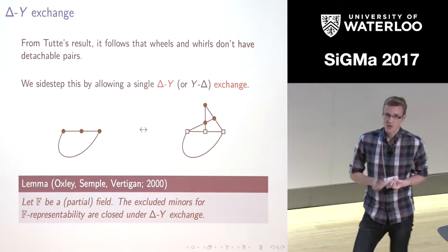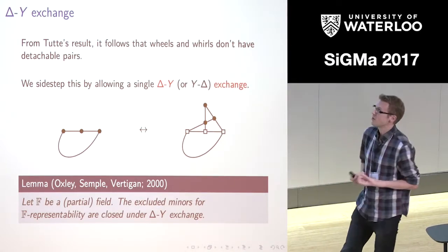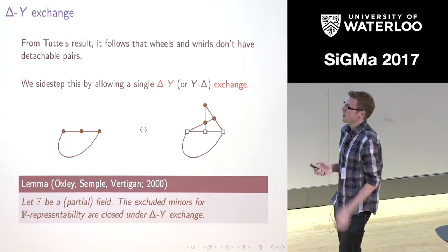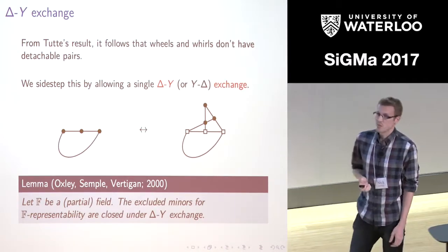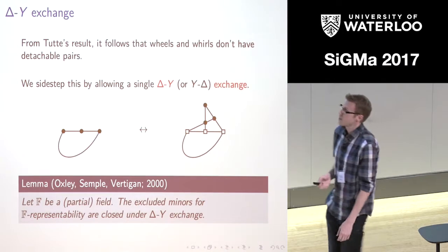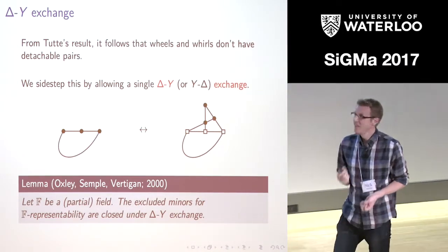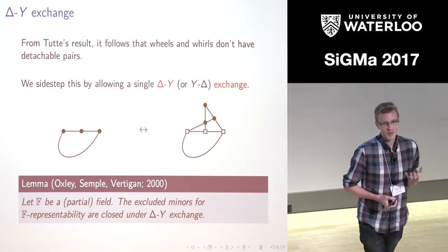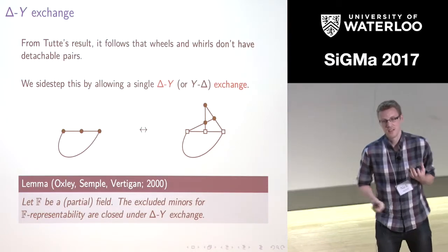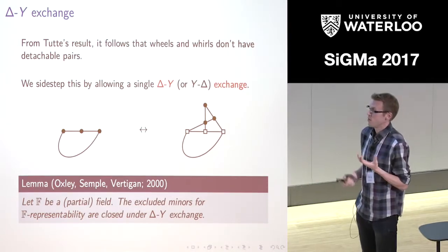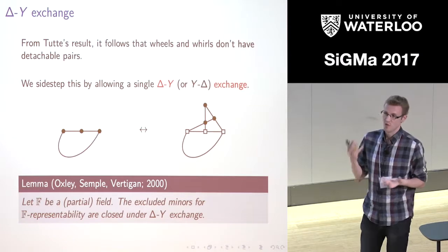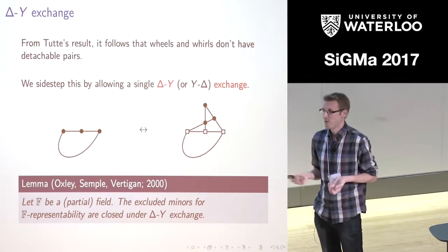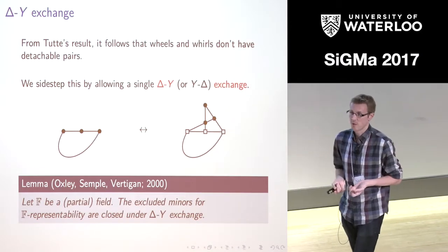The reason we're perfectly happy to do delta-Y exchanges comes back to a result of Oxley, Semple, and Vertigan. If you've got some excluded minor, this result says that if you perform a delta-Y exchange you remain an excluded minor for representability over some field or even over some partial field.